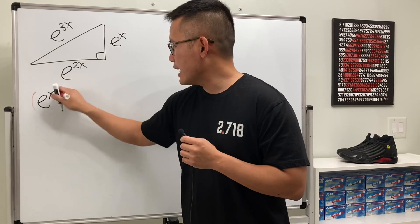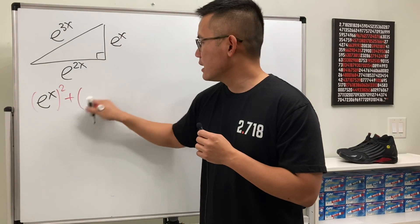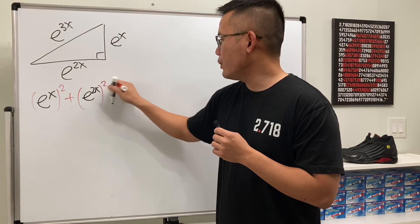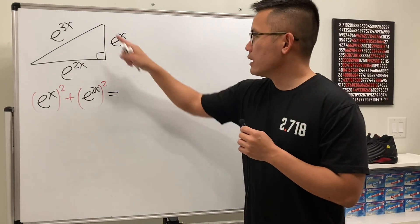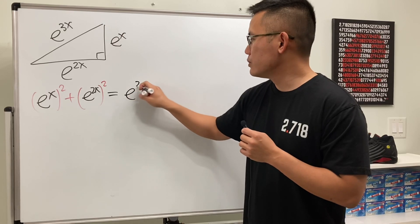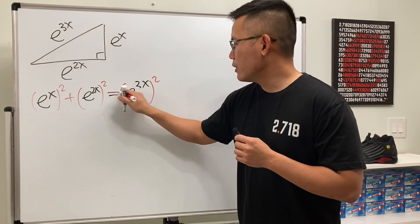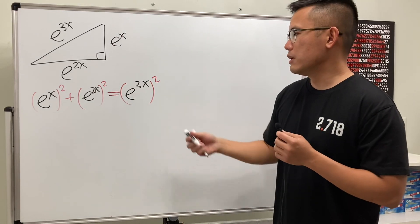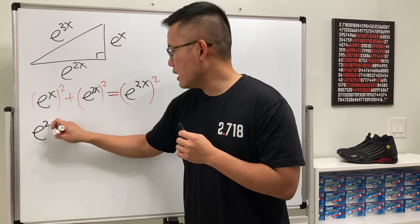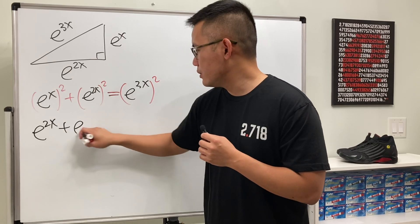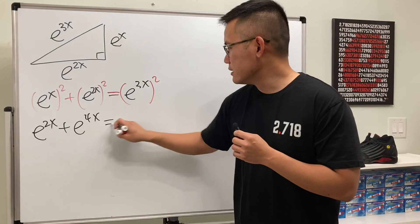So we will look at e to the x and we square that, and then we add this square, and then we are going to make this equal to that, which is e to the 3x, and then we will have to square that. Cool. So now we look at this and we can just simplify this, right? So for example, this right here is e to the 2x, and then multiply the powers, e to the 4x, and then this is equal to e to the 6x.